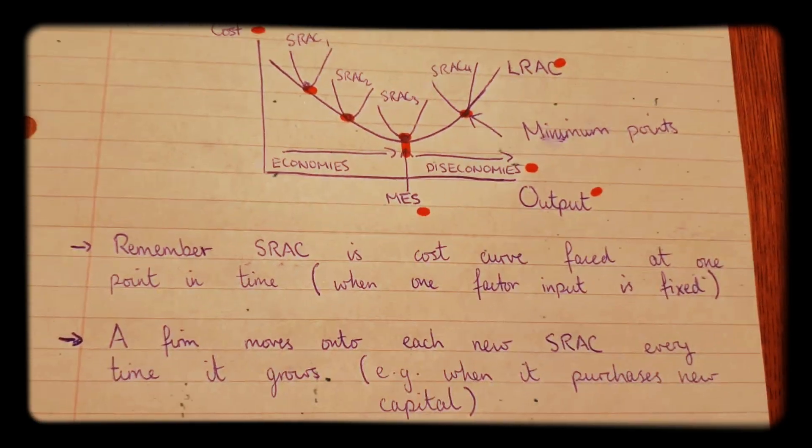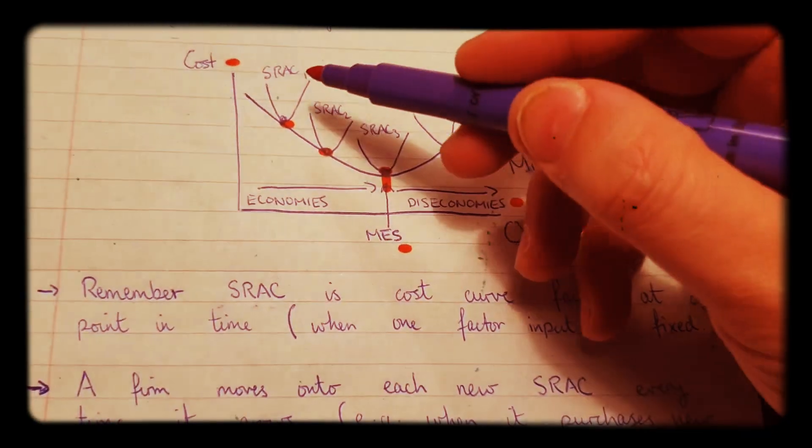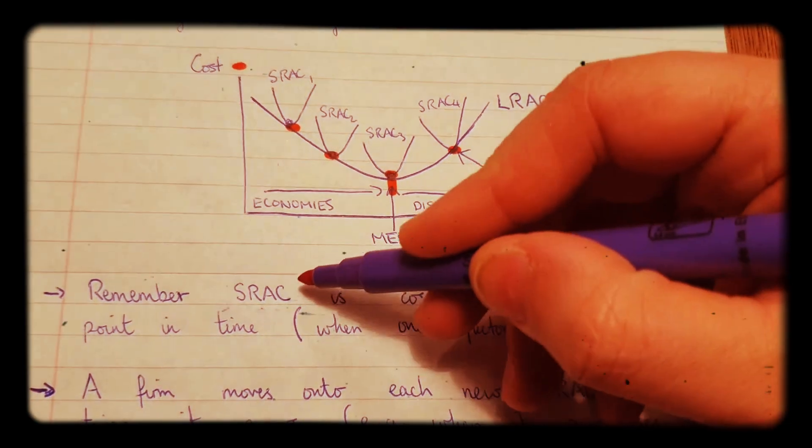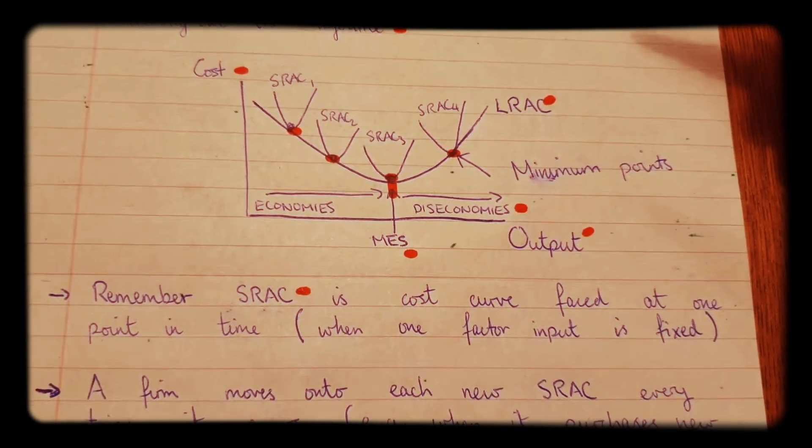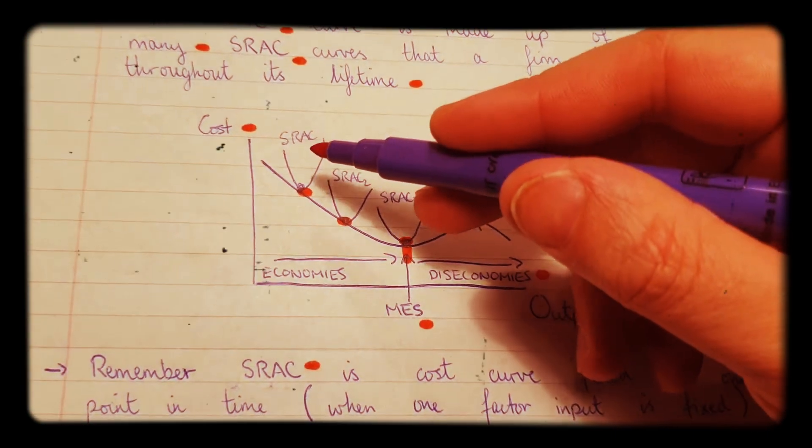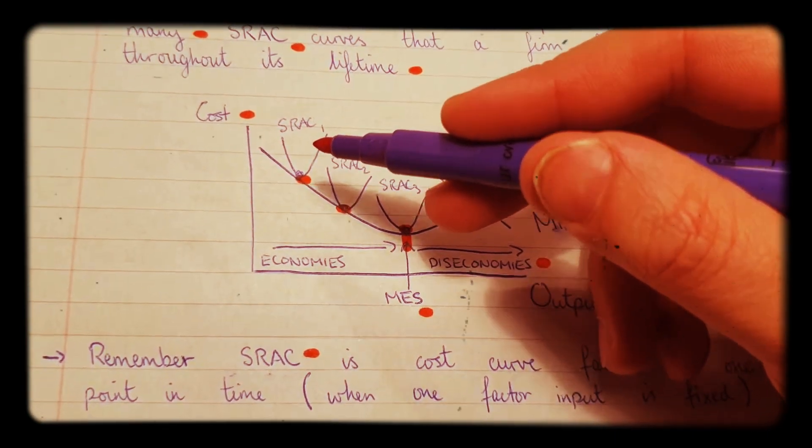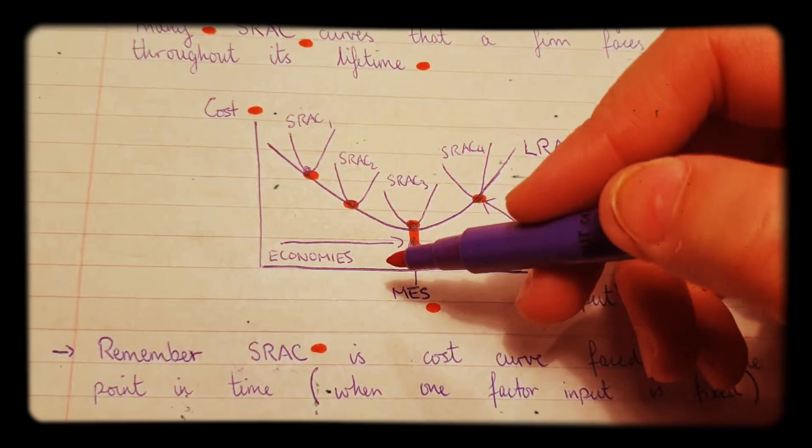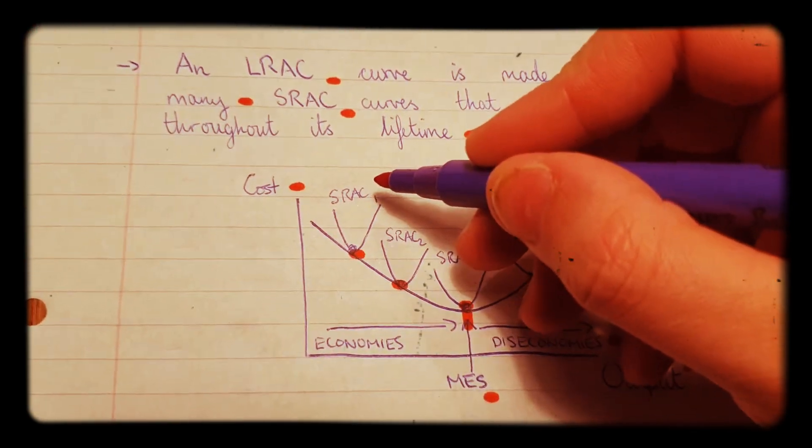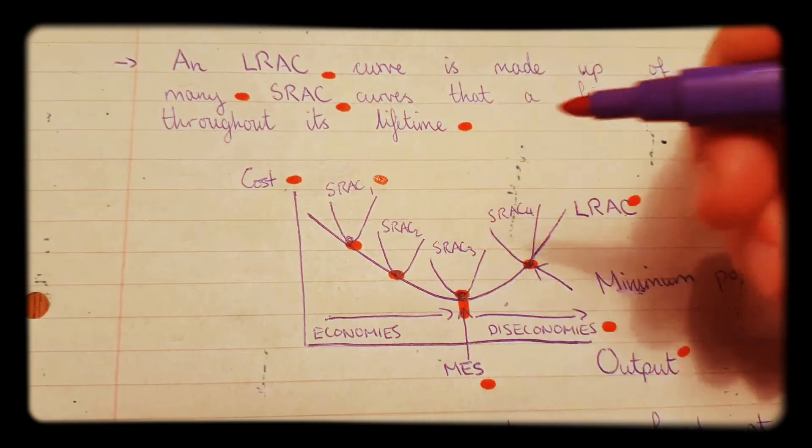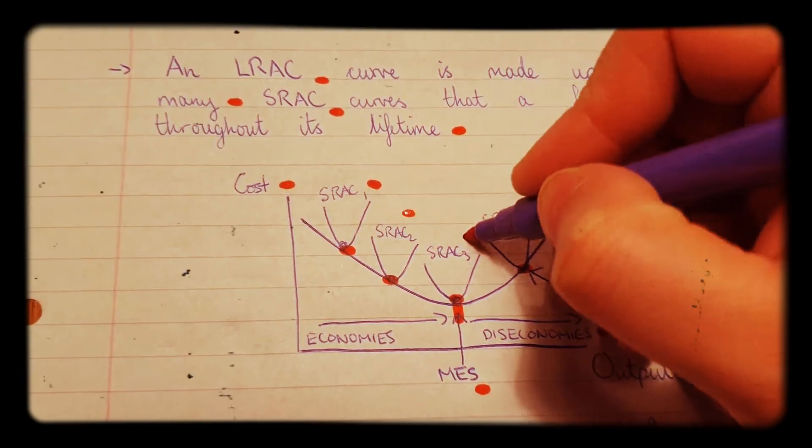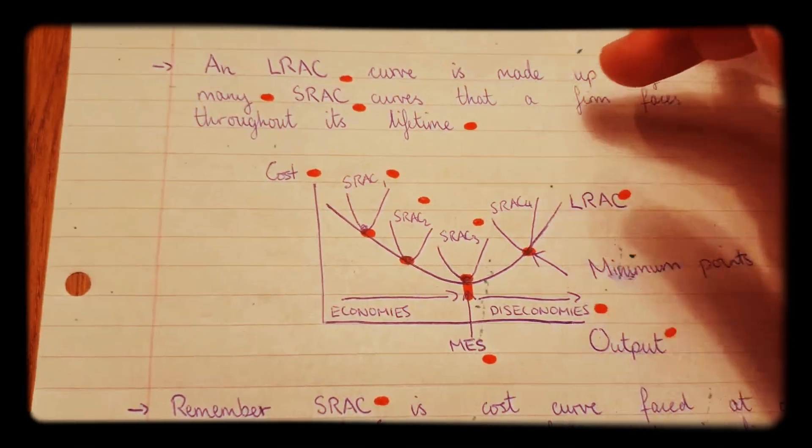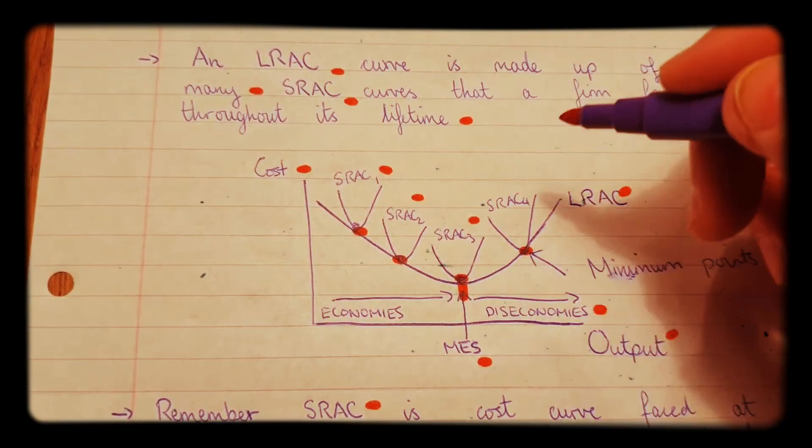So, just remember that these SRAC curves, the short run average cost curves, these are costs that are faced by the firm at one point in time. So this might be, for example, 2010. This might be 2011. This might be 2012. It doesn't really matter. They might only be one month apart.